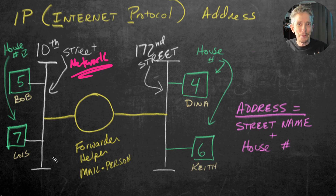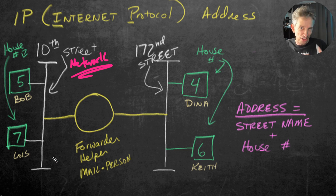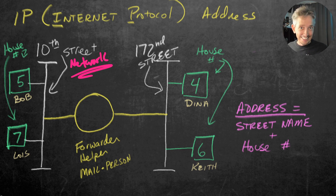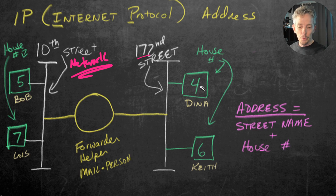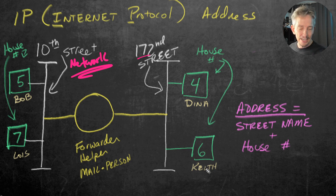It's just two basic components: the street name and a house number — except with computers, it's a network ID and a host address on that network. Extending that to 172nd Street: if this is a computer network with IP, this could be the 172 network. On that network, Dina's computer is at host address four, and Keith is at host address six on the 172 network.